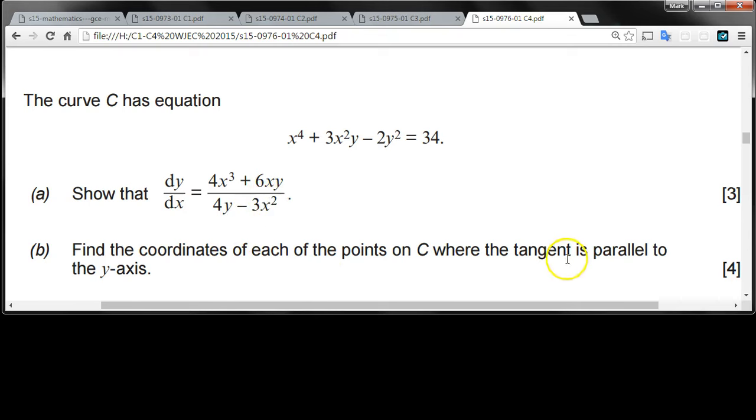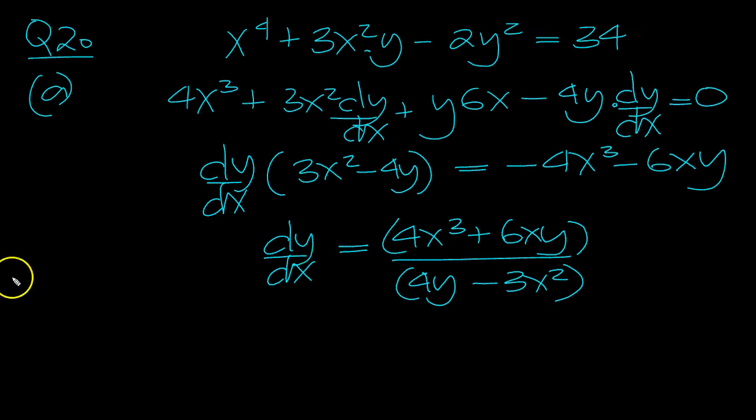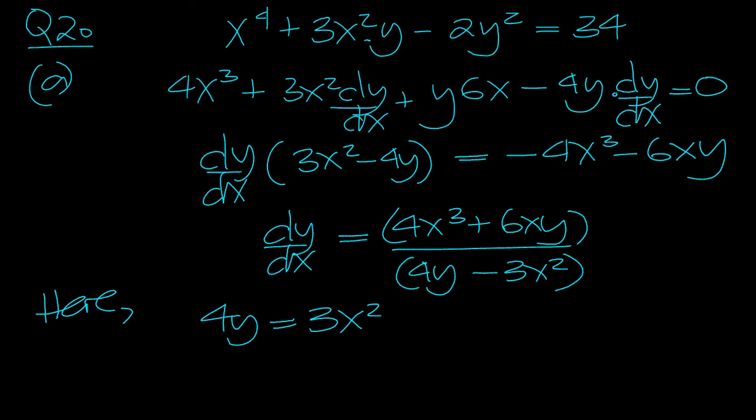Where the tangent is parallel to the y-axis, so when does the gradient zoom off to infinity, parallel to the y-axis is when this equals 0. So here, the denominator equals 0. And 4y equals 3x squared.